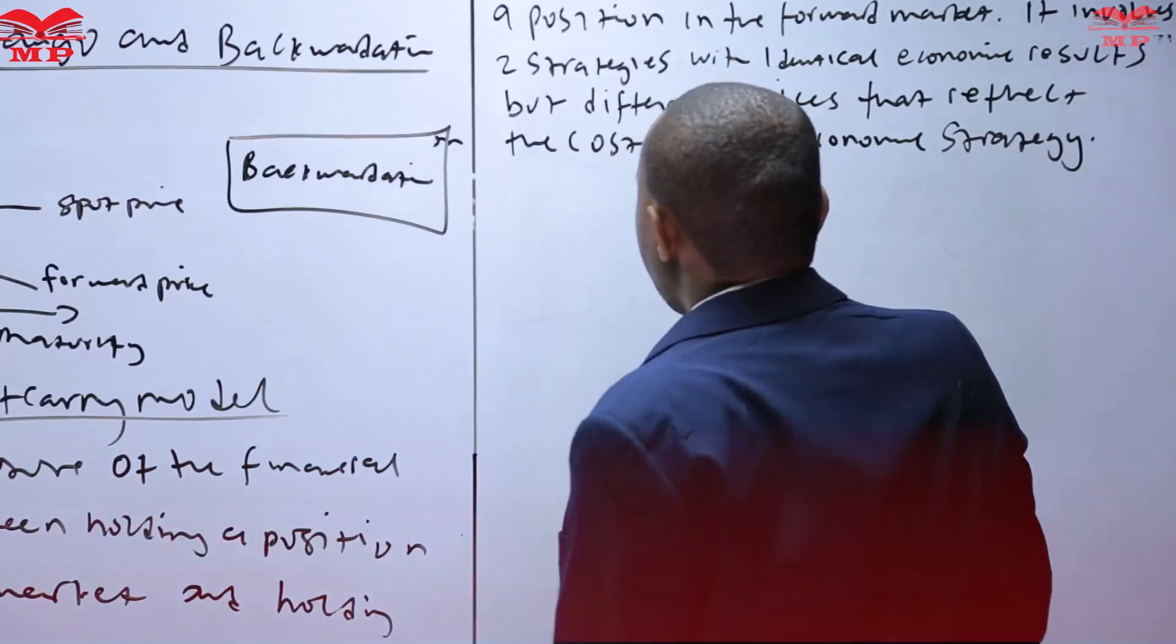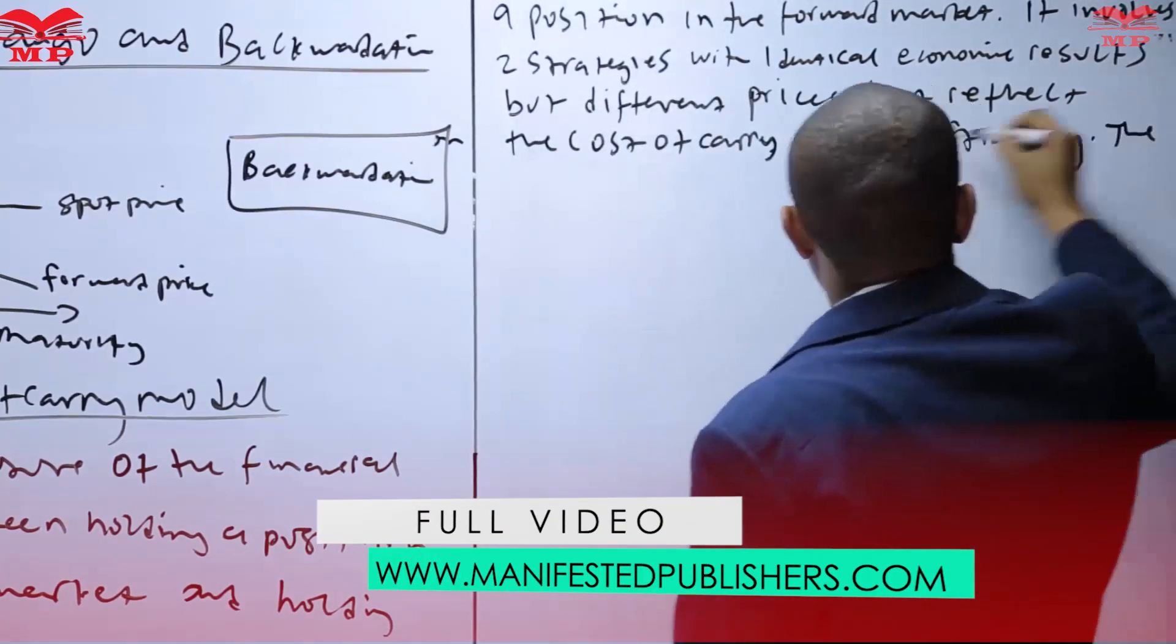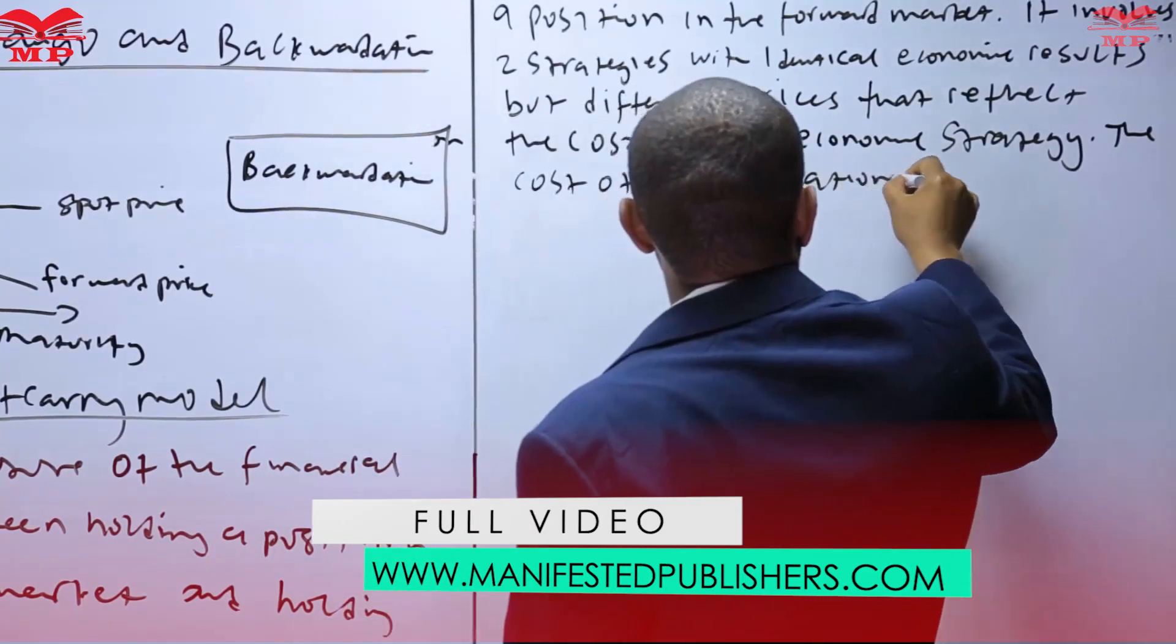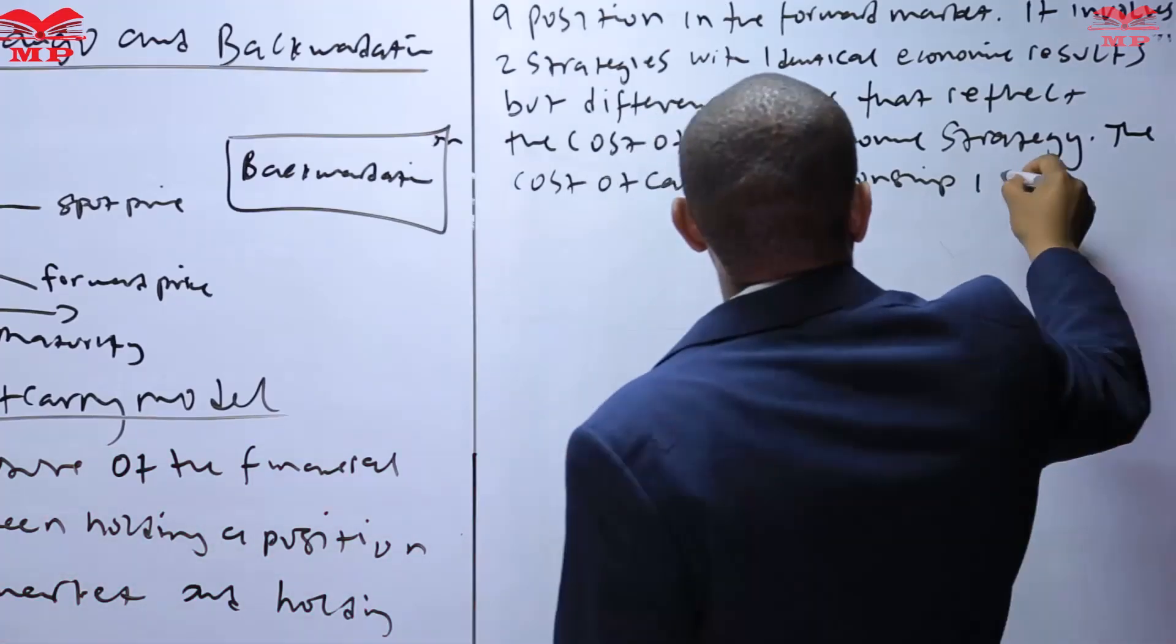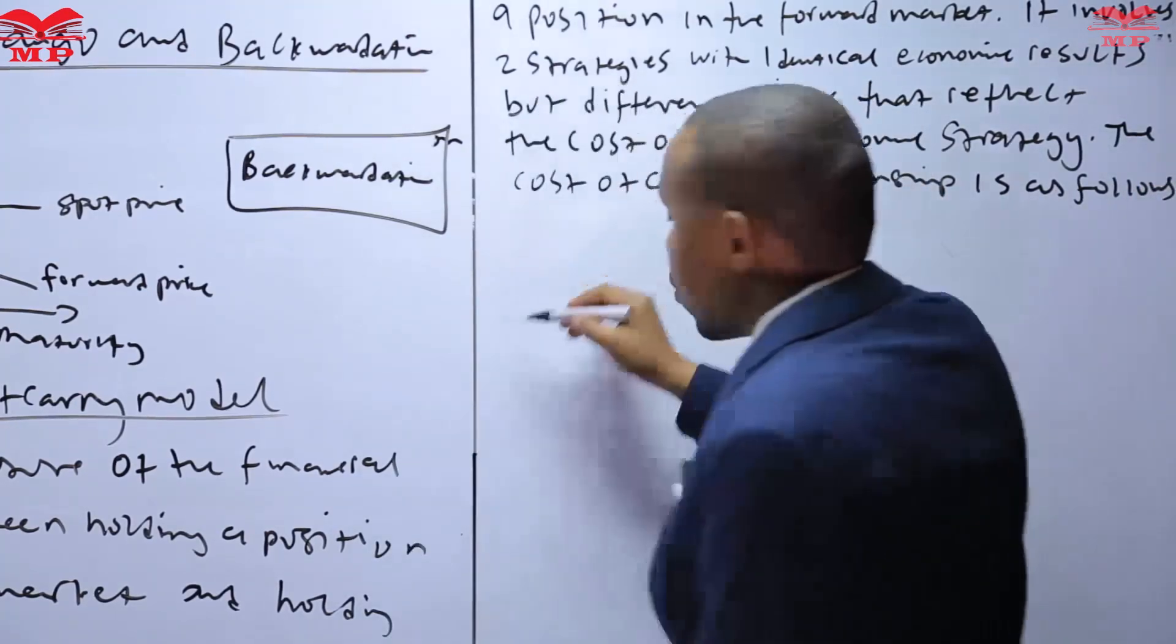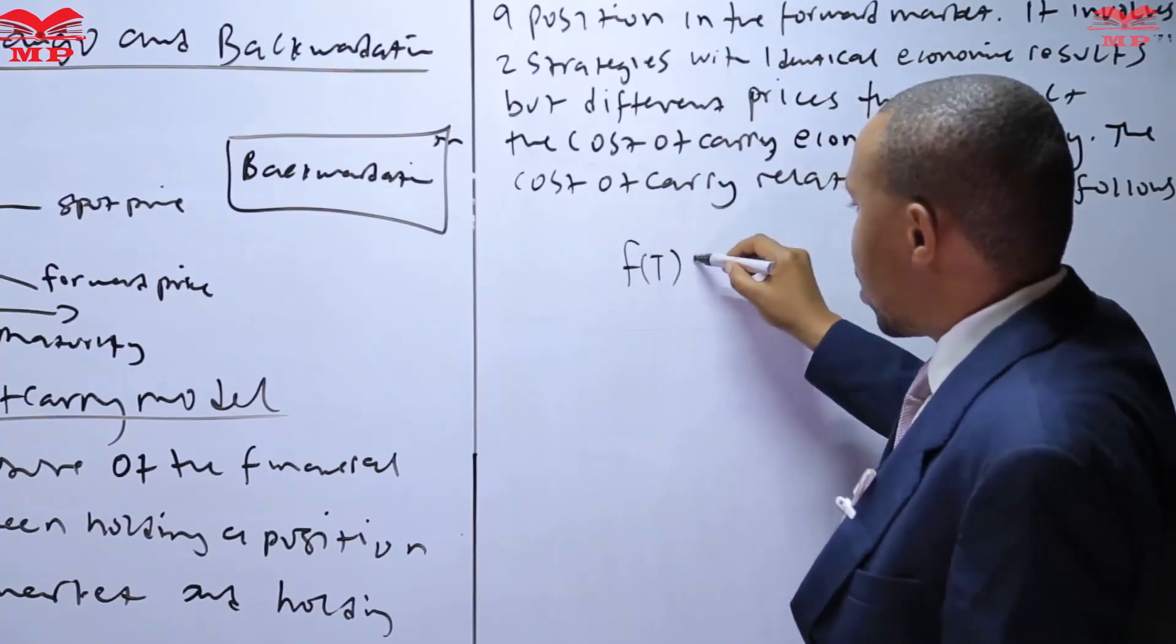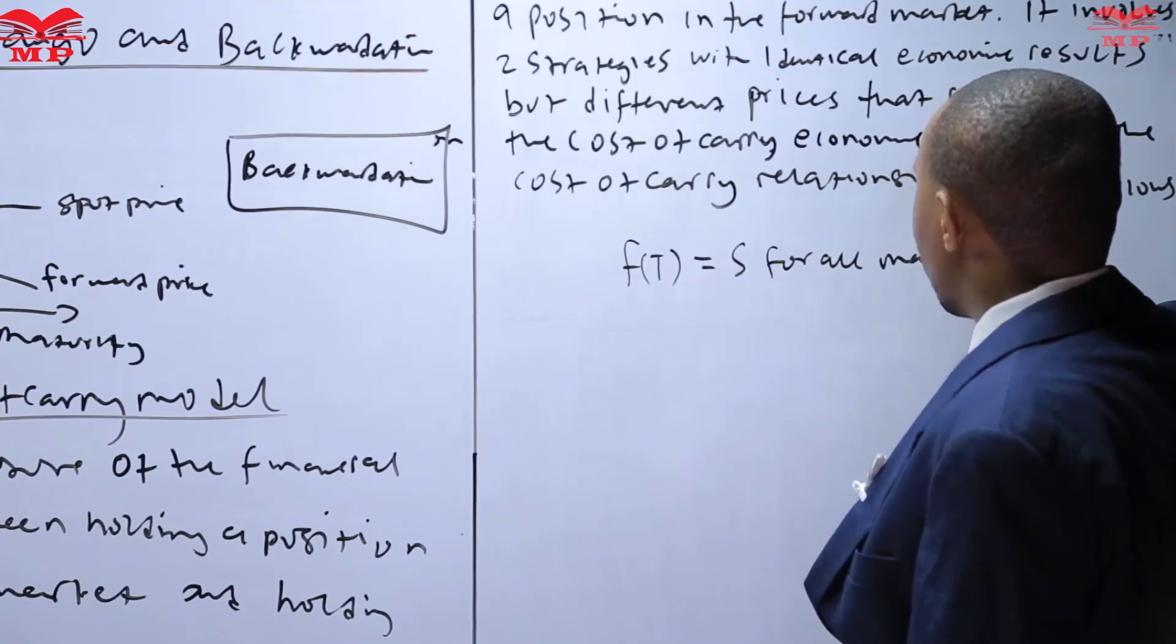So the relationship, you can see the cost of carry relationship is as follows. In our previous lesson we had said that the forward price FT equals S for all maturities.